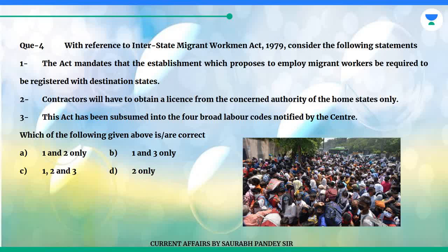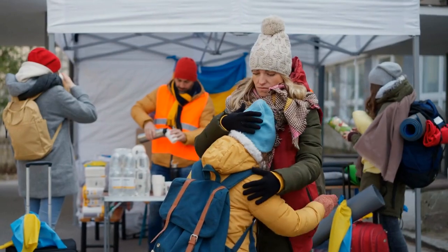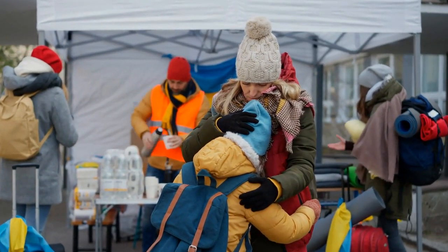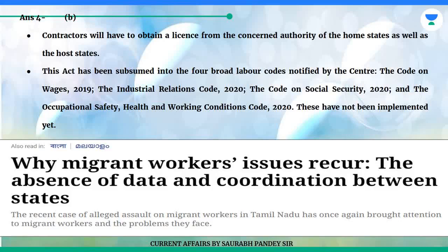Which of the following given above is correct? A. One and two only. B. One and three only. C. One, two and three. D. Two only. The answer is B. Contractors will have to obtain a license from the concerned authority of the home states as well as the host states.